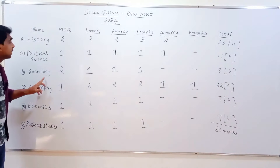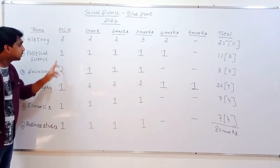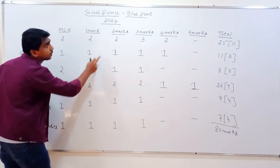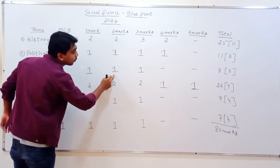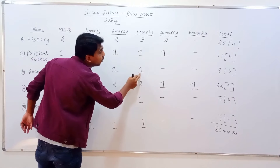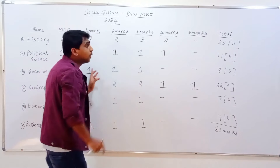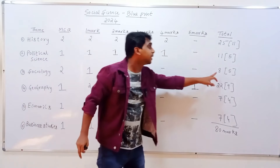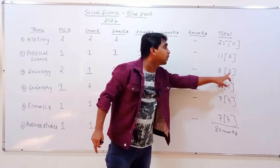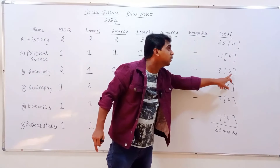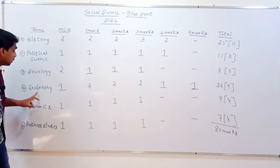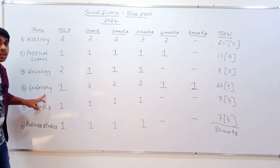Sociology: multiple choice is 8 questions. One mark is one question, two mark is one question, three mark is one question. Total mark is 8 marks. Total number of questions is 5.